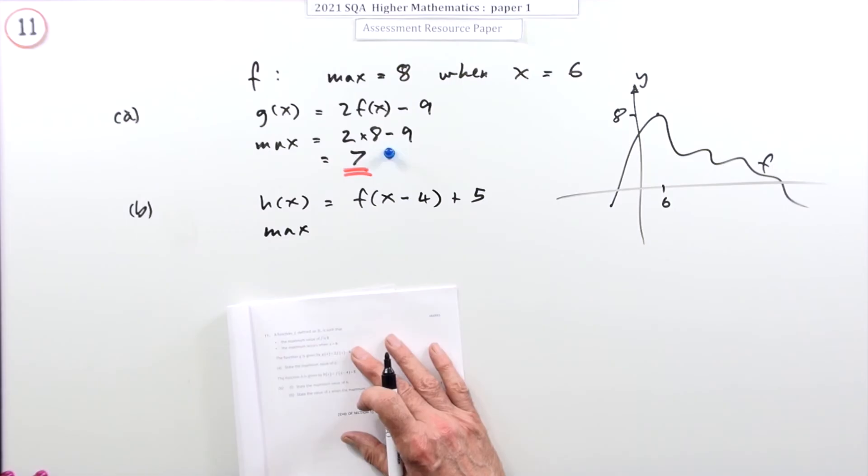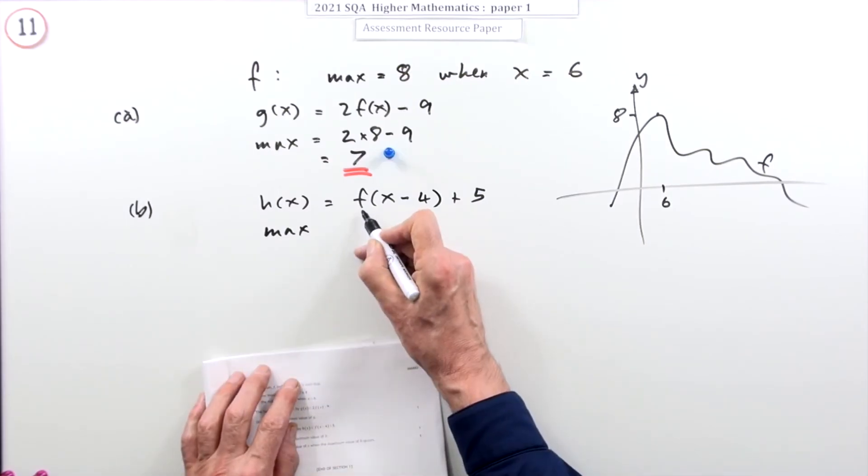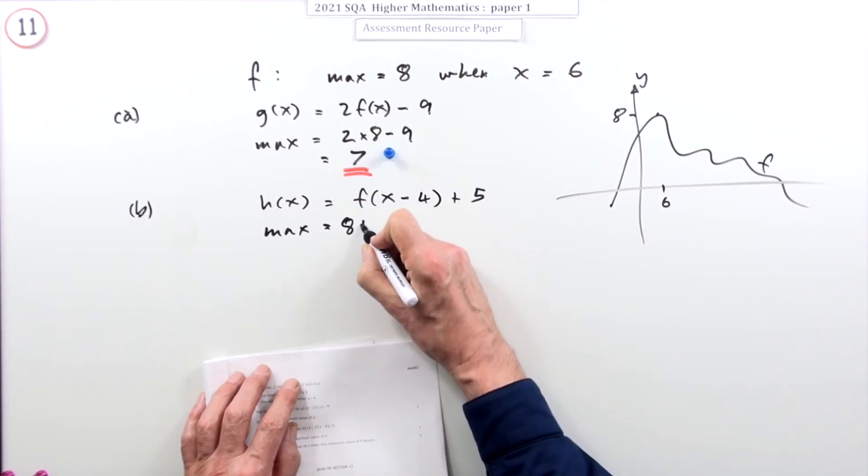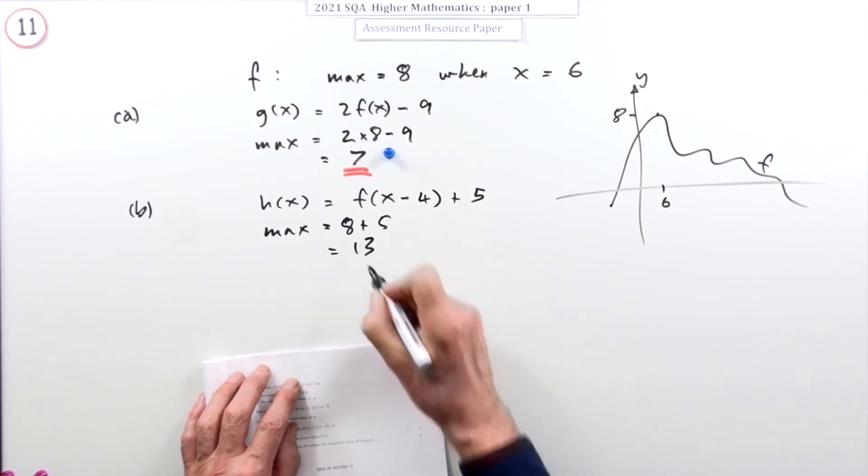This says the height of h is the same as the height of f add on five. So if the highest f got to was eight, the maximum value of this is going to be 8 plus 5, which is thirteen.